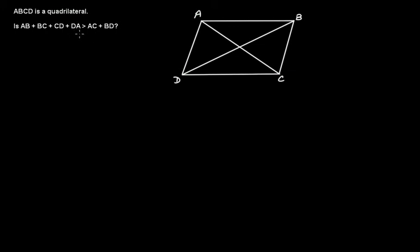We have another problem here. In this problem, ABCD is a quadrilateral and it's asking whether AB plus BC plus CD plus DA is greater than AC plus BD. So basically it's asking whether the sum of all the sides of this quadrilateral is greater than the sum of the lengths of the diagonals. Let's see how we proceed.